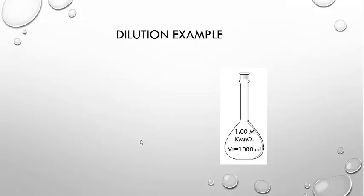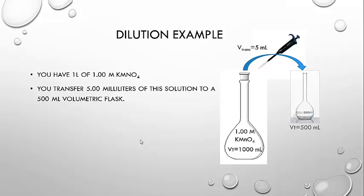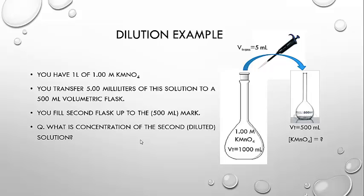Let's just work through a very simple example. Say you've got a solution, one mole per liter, in the potassium permanganate. And you have one liter of it, or a thousand milliliters equivalently. Then you transfer five milliliters of this solution to a 500 milliliter volumetric flask, which you then make up to the mark. And then you mix well to make sure it's a homogenous solution that you've just created. And you ask yourself, what's the concentration of this new solution that you just created?